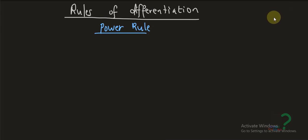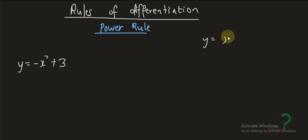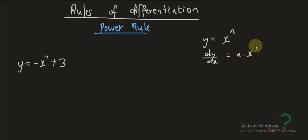In this video we are going to be looking at differentiation rules, doing examples on differentiation rules. We are going to start with the power rule. Suppose we're given a function y equals x squared plus 3. The power rule generally says that if you have y equals x to the power n, then the derivative dy over dx is going to be n multiplied by x to power n minus 1.